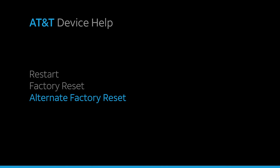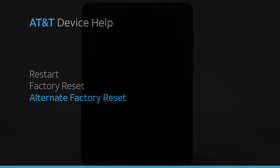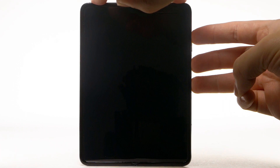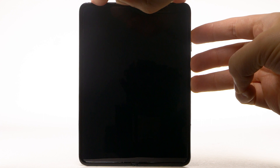Alternate Factory Reset. If unable to perform the standard Master Reset using the previous steps, try the alternate method by first powering the device off. With your device powered off, press and hold the Bixby, Power Lock, and Volume Up buttons until the device turns on.